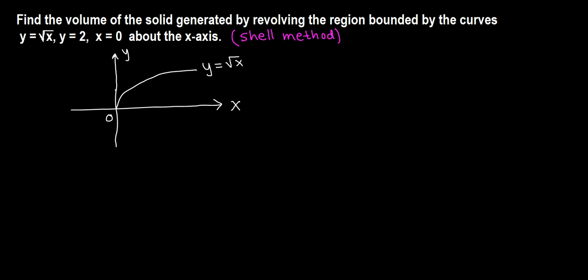Y equals 2, so 1, 2, and this is y equals 2. And x equals 0 is the same as the y-axis, so the region we are looking at is this shaded area.